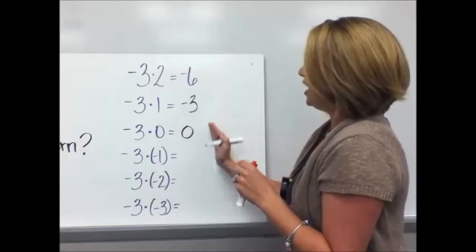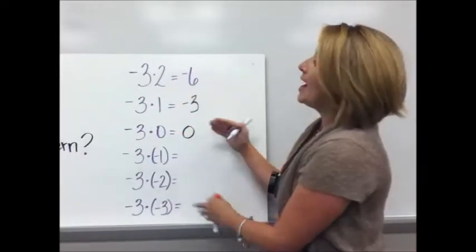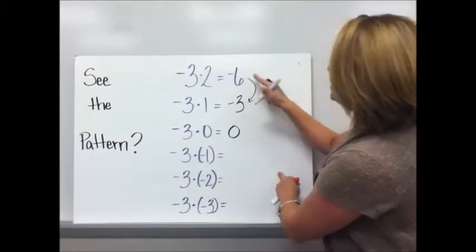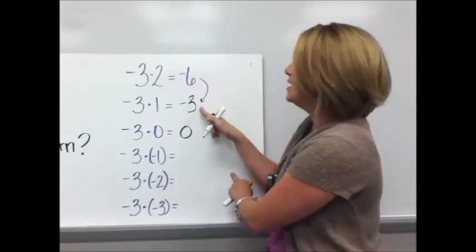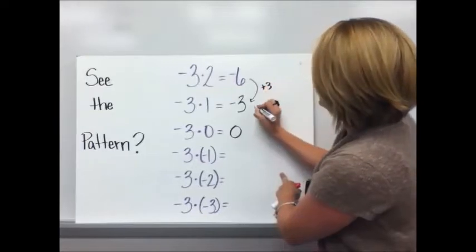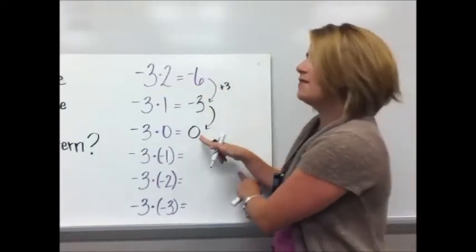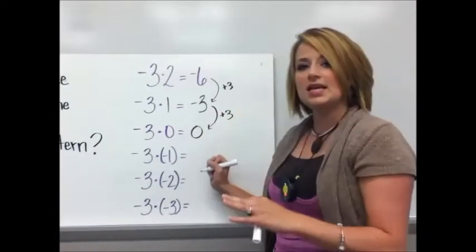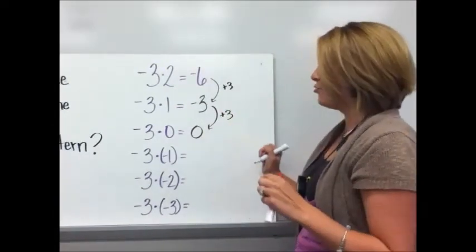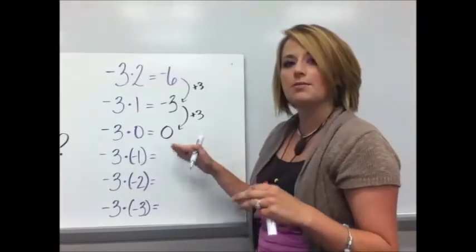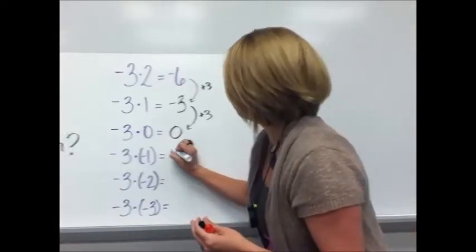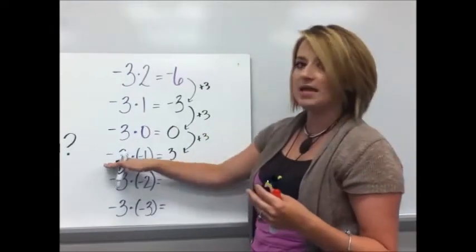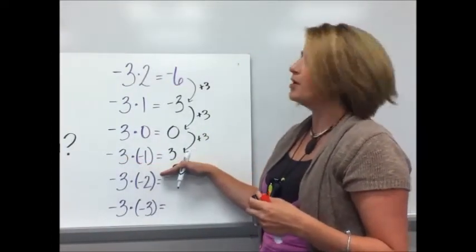Okay so let's see if we can find a pattern. What is the change between these? We're looking for the pattern and remember it's repeated addition with multiplication. To go from negative six to negative three I add three. To go from negative three to zero I add three. So to continue that pattern I'm just going to add three each time. What is zero plus three? Well that's three.